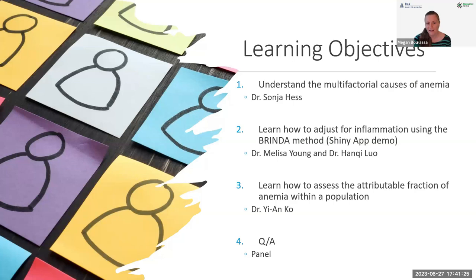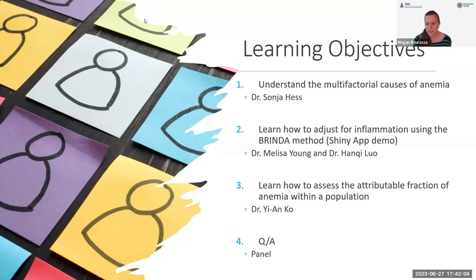We will be going over the multifactorial causes of anemia, which Sonia will present first. Then we'll learn about the adjustment for inflammation and a new Shiny app developed by the team. And then we'll learn ways to assess the attributable fraction of anemia within a population. Each presentation will be about 15 minutes. If we have time, we'll take questions immediately after, but we've saved about 15 minutes at the end for Q&A. Feel free to write questions in the chat, and I'll also be putting links to publications and other resources in the chat as each presenter goes through their material. I'll now pass it over to Sonia to talk about some of the causes of anemia.